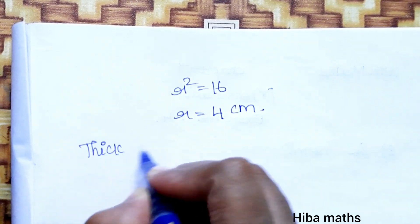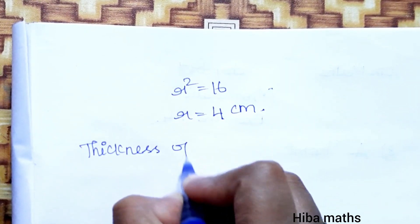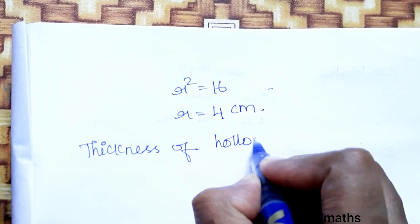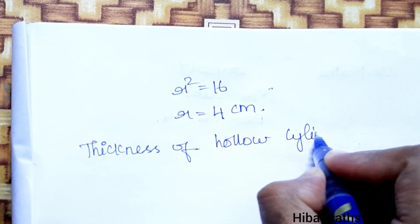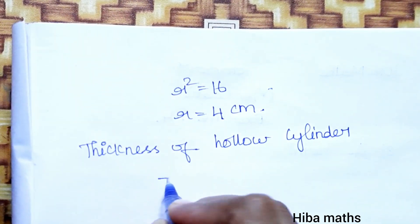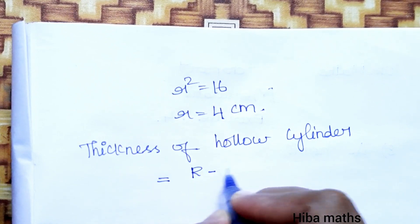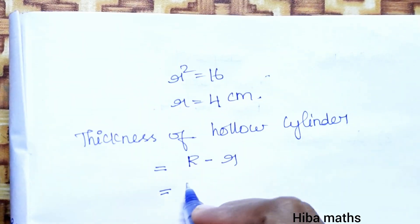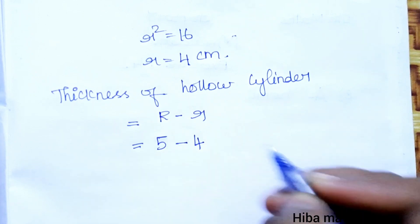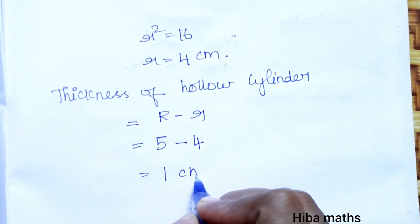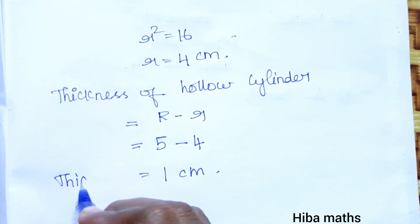So thickness of hollow cylinder equals capital R minus small r. Capital R value is 5, small r value is 4. 5 minus 4 equals 1, so 1 cm. This is the thickness value.